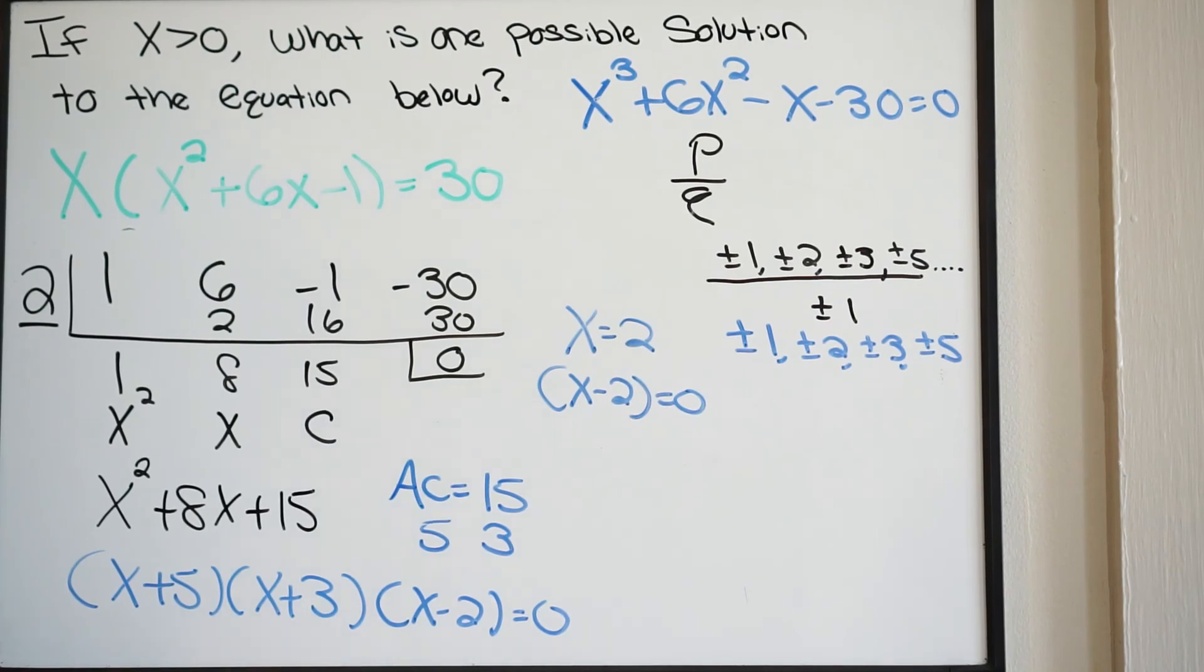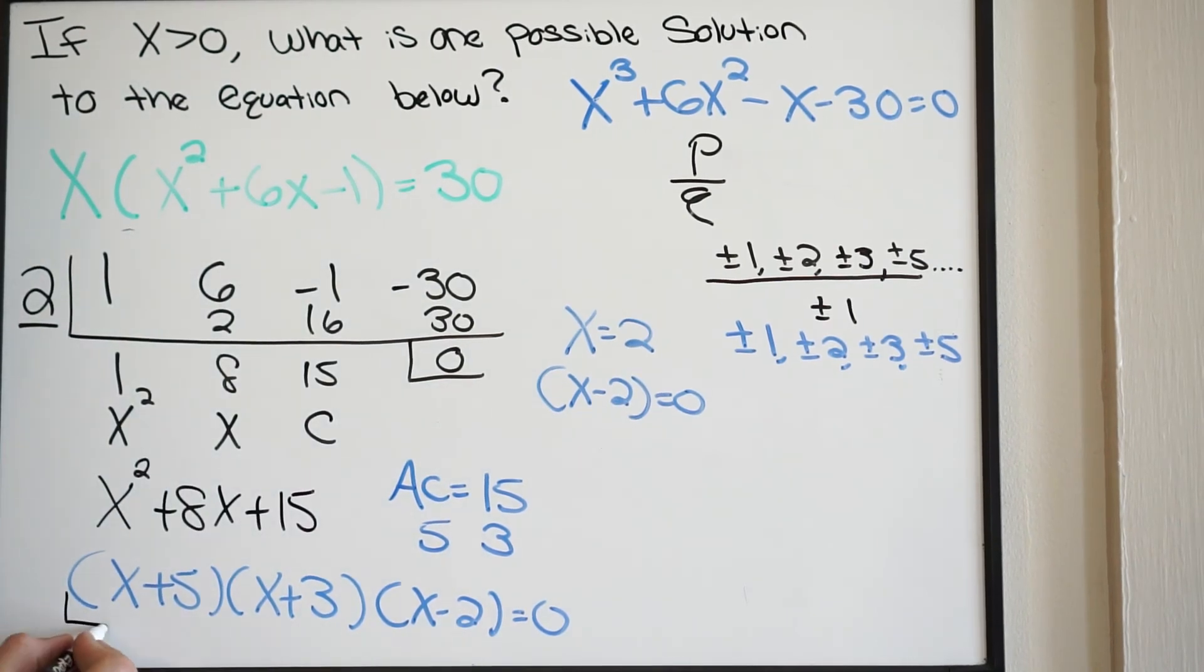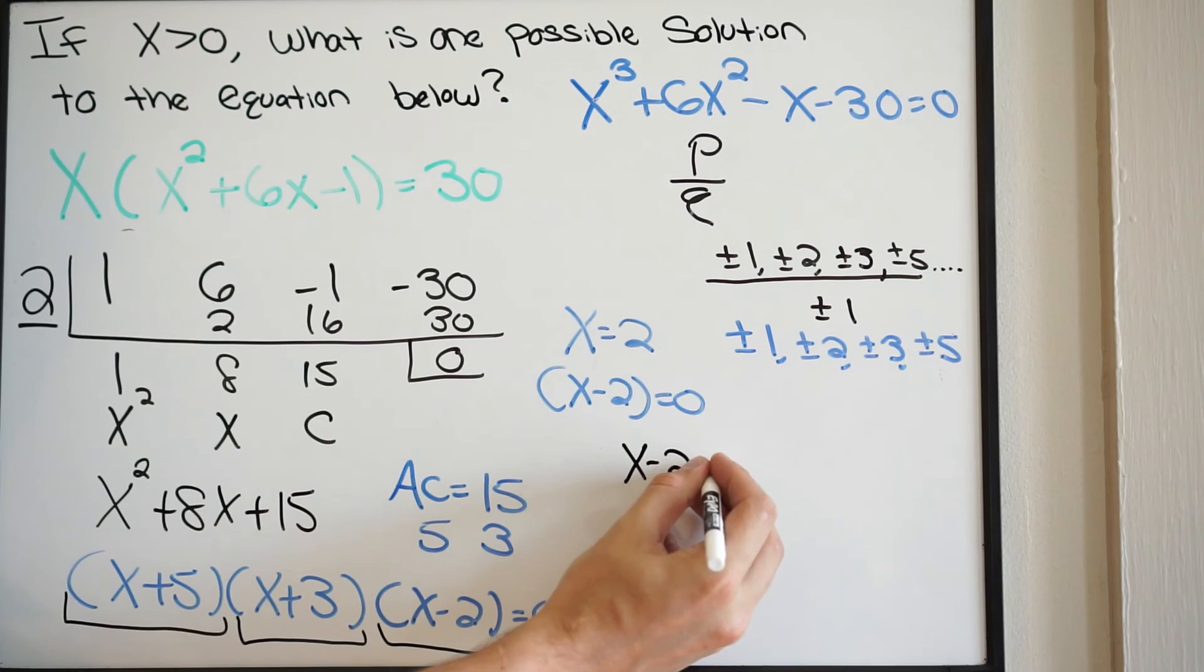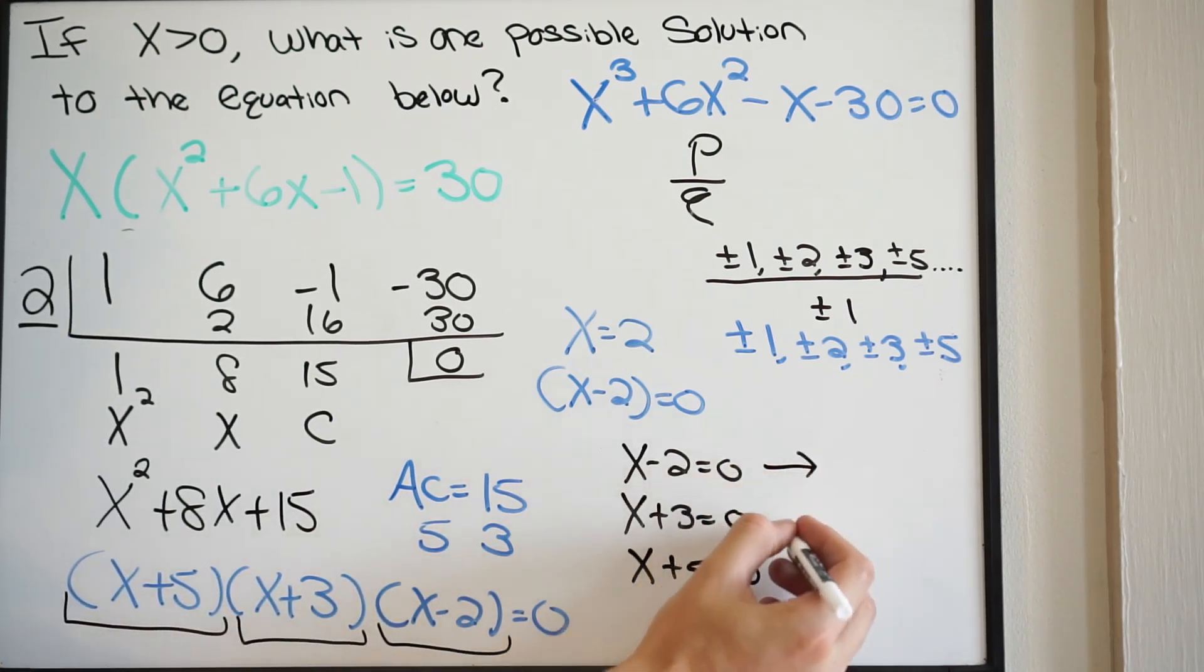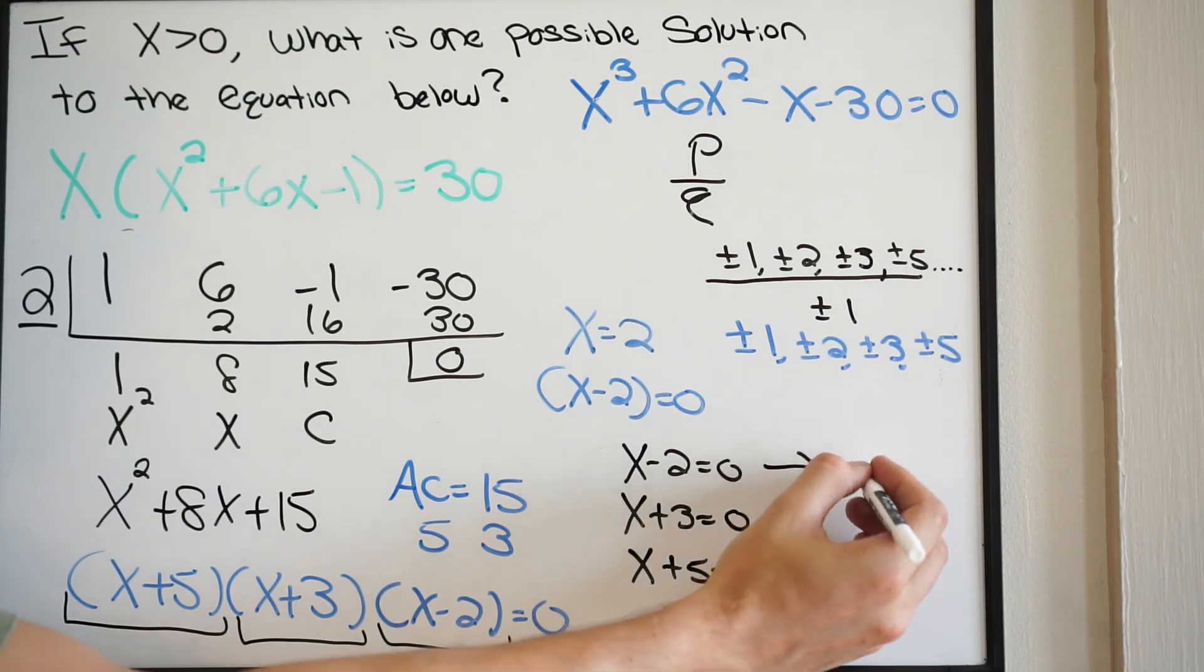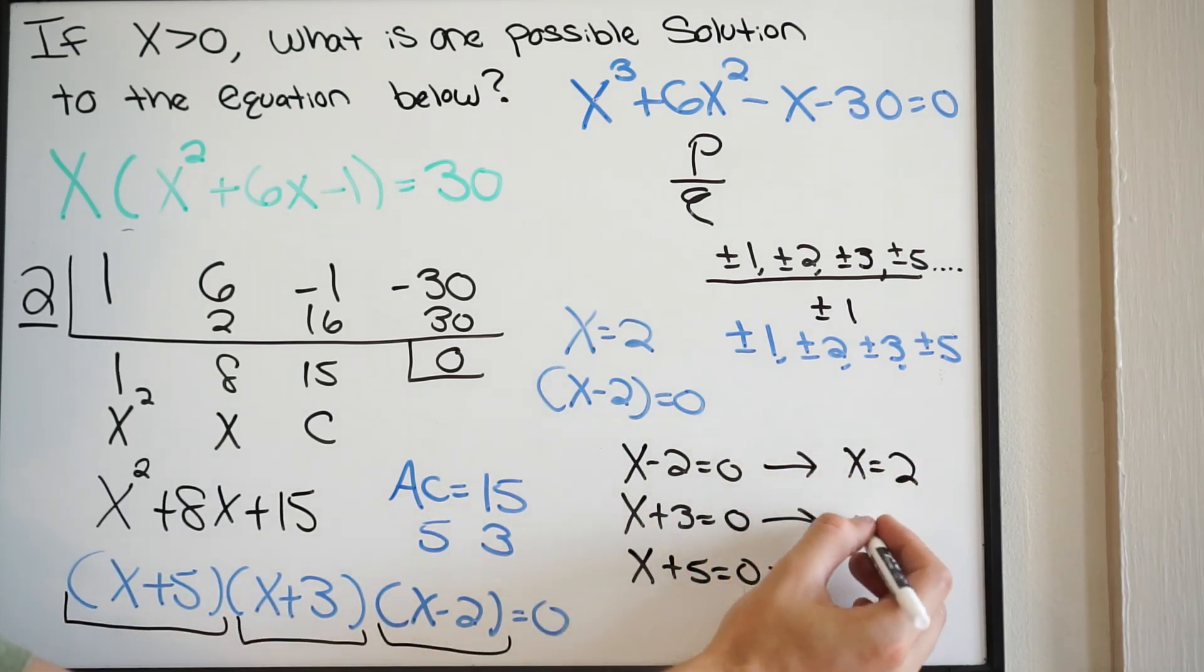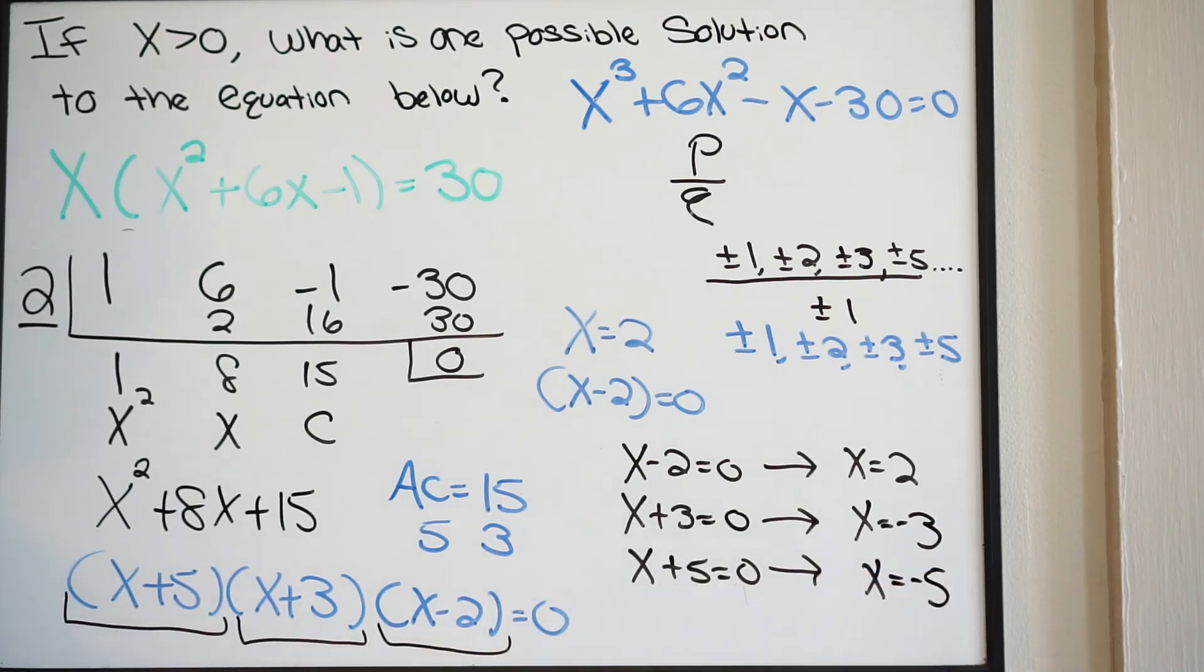What we just did is we just factored our whole polynomial. At this point, you would take each one of your factors, set them equal to 0 and solve. For example, you'd have x minus 2 equal to 0, x plus 3 equal to 0, x plus 5 equal to 0. So when you solve these, we get x equals 2, x equals negative 3, x equals negative 5.